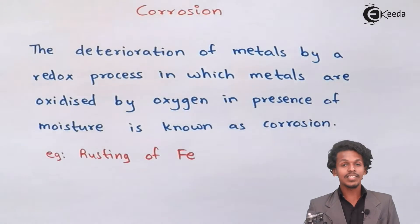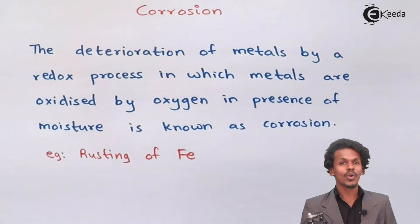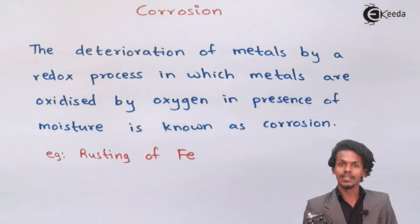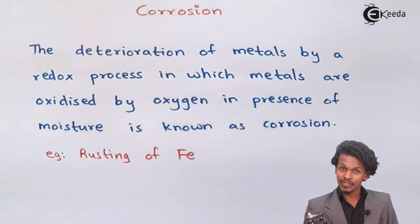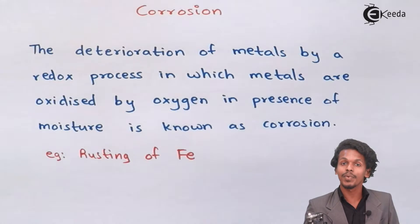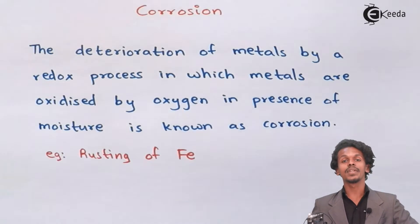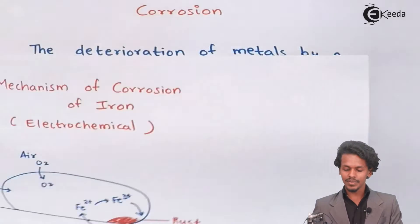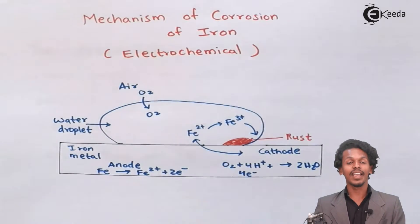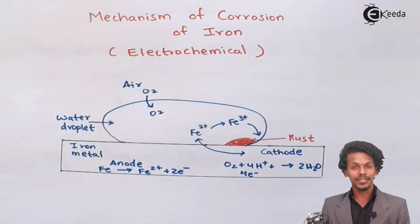Now let us learn about the rusting of iron and see why the moisture present in air plays a very vital role in the destruction of a particular metal. Let us see the first example — the mechanism of corrosion of iron in an electrochemical process.